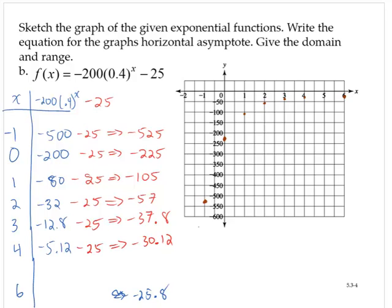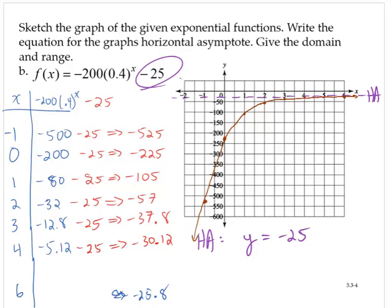So notice if I draw a smooth curve, it's not approaching zero, but rather it's approaching that, what again we call a horizontal asymptote. And again, it is at that value that's being subtracted from the exponential part. And so we have a horizontal asymptote. And in fact, the horizontal asymptote is defined by y equals negative 25. And notice that that's related to that value that's being subtracted on the function.